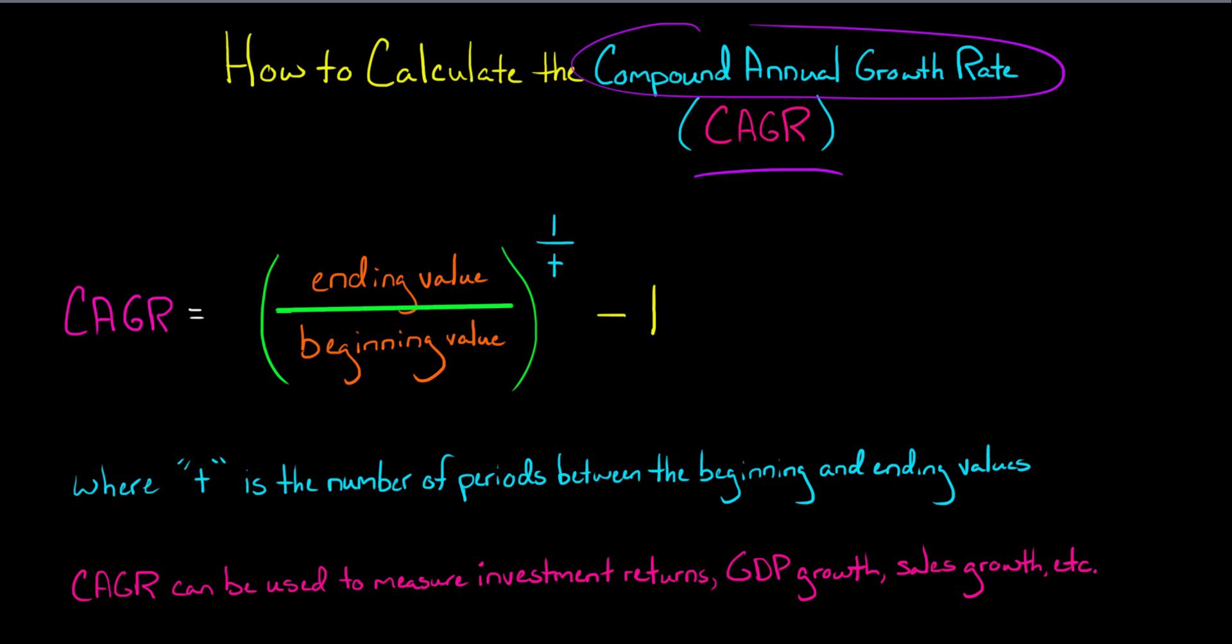So let's say we're trying to calculate the compound annual growth rate of an investment. In the numerator here, we have the ending value. So that's at the end of all the years, or months, or quarters. This is the ending value of that investment.